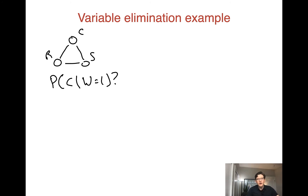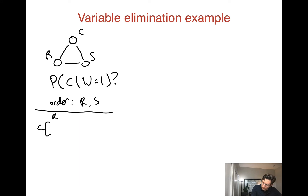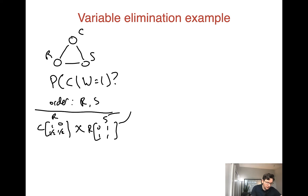Now that we've converted our network to factors, we can actually run variable elimination. We want the distribution over C, so we need to eliminate both R and S, using the ordering R first, then S. To eliminate R, we collect all factors that have R in them. There are two: the factor over C and R — values (C=0)→1, (C=0)→0, (C=1)→1/2, (C=1)→1/2 — and the factor over R and S — values 0, 1, 1, 1.